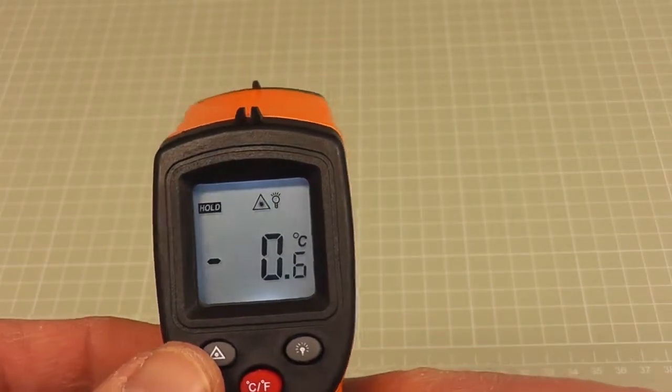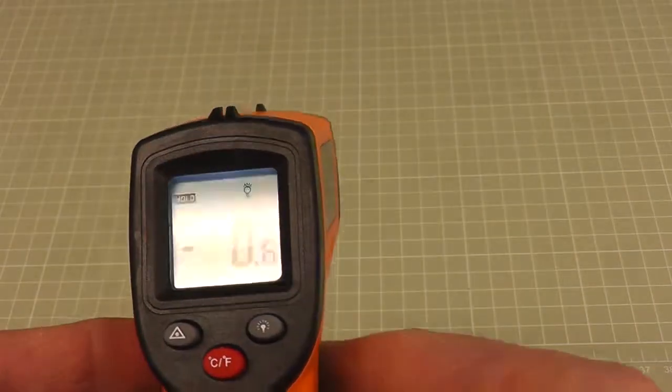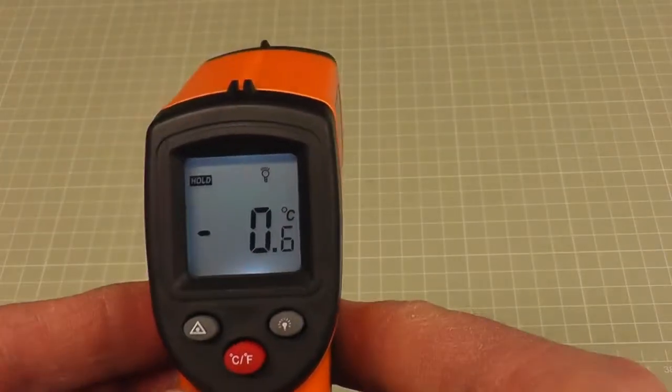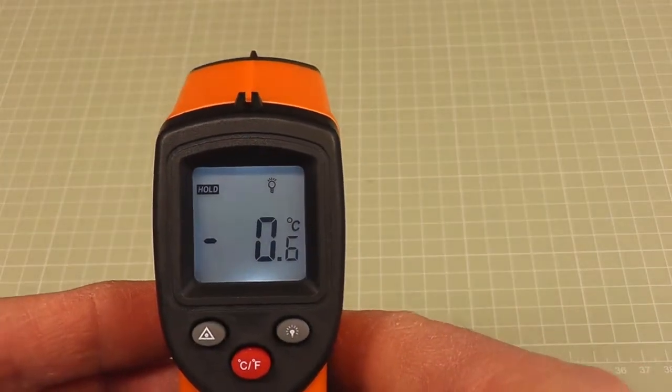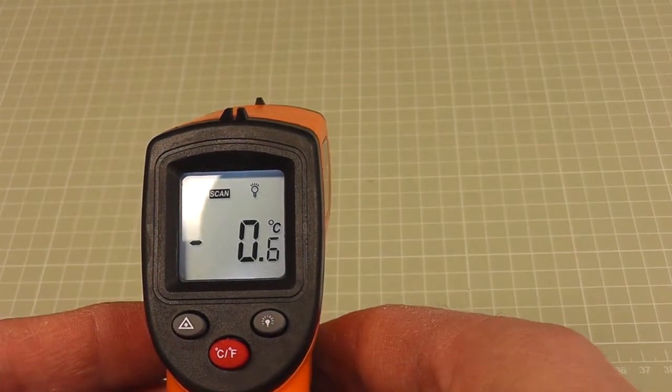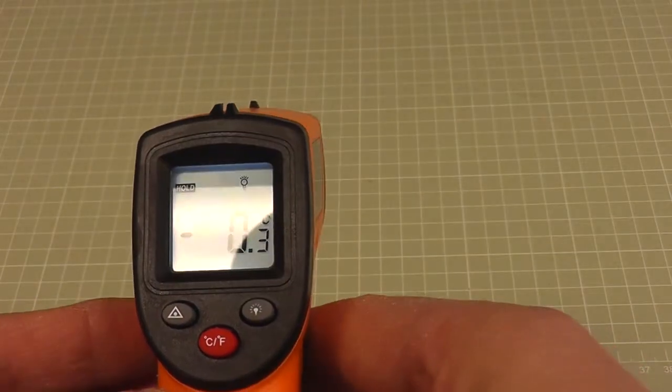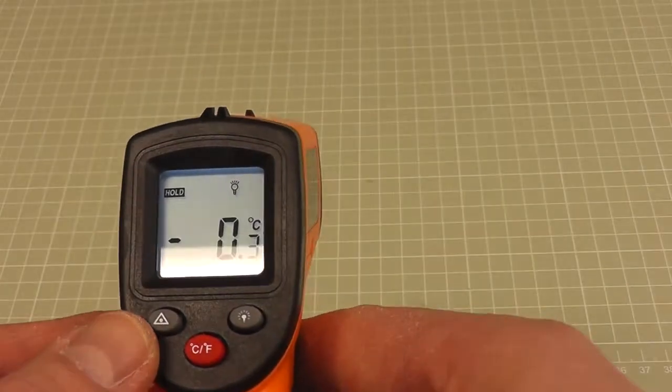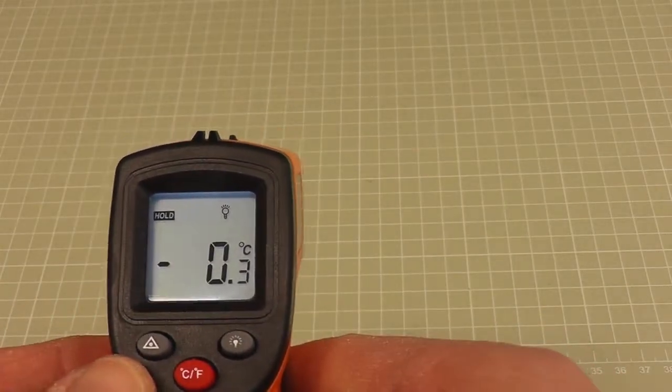This button here turns the laser on and off. So if we turn it off and then take a temperature reading, it's a little bit cold in here this morning. I haven't put the heating on, so it's reading zero degrees apparently. I'm not sure it's that cold, but it could possibly be. It's about minus four outside at the moment.